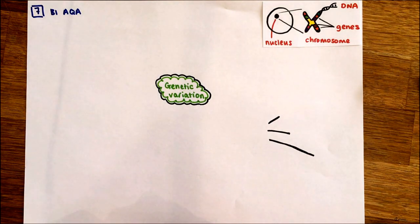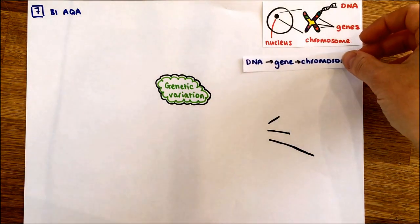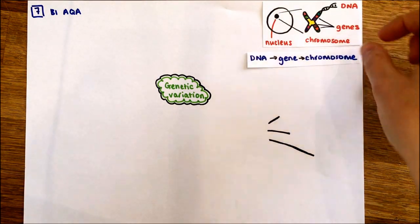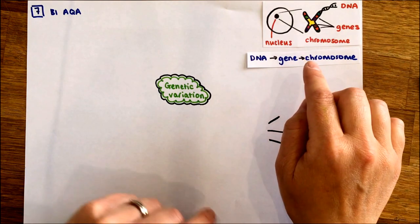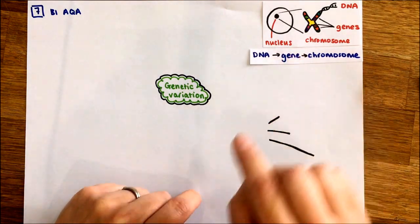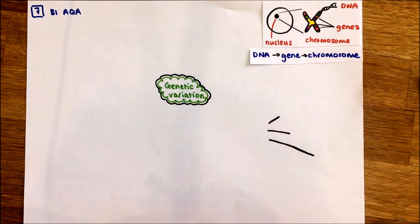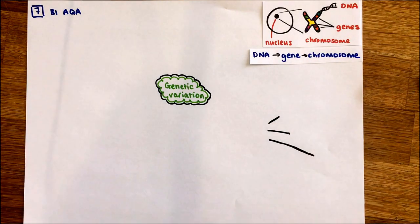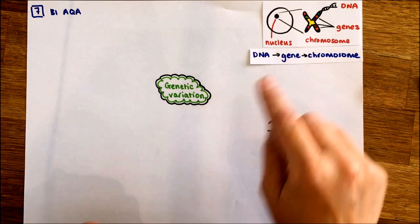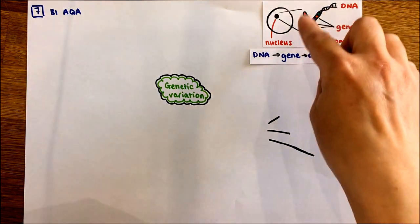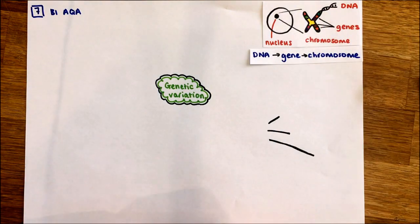If we talk about those in size order - which you've been asked to do several times in exam papers - DNA is the smallest, then gene, then chromosome. DNA is a long molecule; sections of it are genes, and they get packaged together into this chromosome structure.